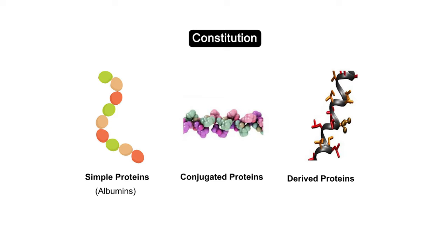Conjugated proteins are complex proteins that are combined with characteristic prosthetic groups, non-amino acid substances such as nuclear proteins, a combination of protein and nucleic acid, and chromoproteins that are combination of protein and color pigments.